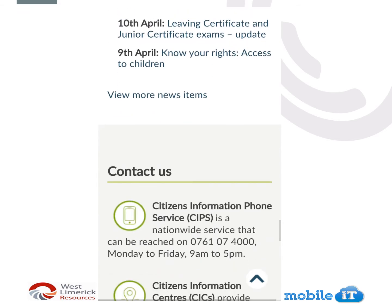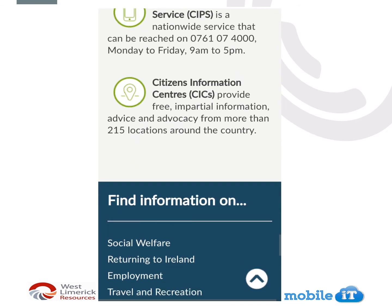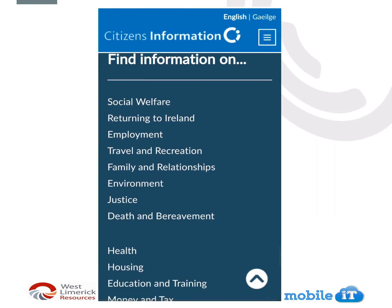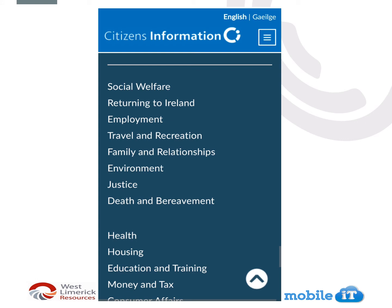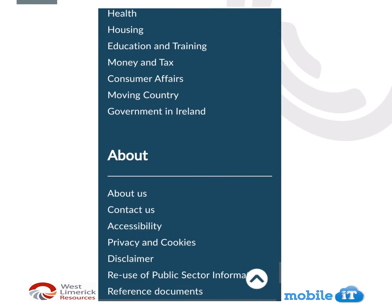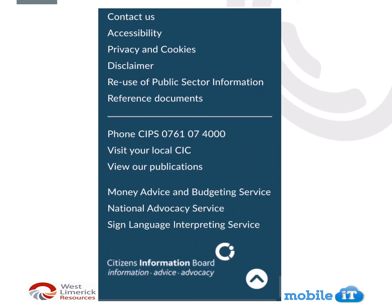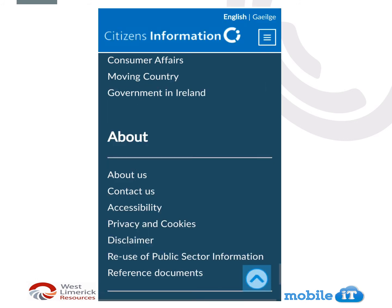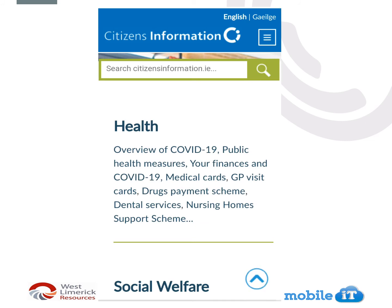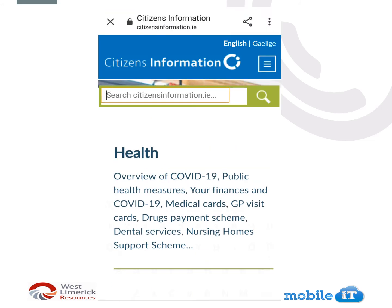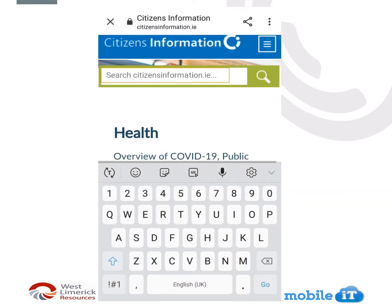There are different examples as you go down along. You have contact information, or you can find information on different topics — you can click on one of these if you wanted to find information on employment or social welfare. If we click on the little arrow, it'll bring us back up to the top of the page. You can also click into the search bar if you wanted to search for a specific subject.